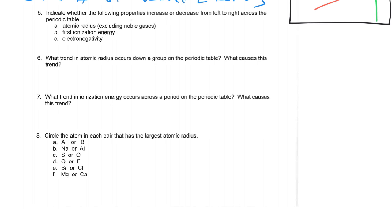And moving on. Let's just go all the way to number eight. Circle the atom in each pair that has the largest atomic radius. Again, we're just making comparisons, but I think it could be very helpful to have just a very rough sketch of a periodic table to make these comparisons. Aluminum and boron. So boron is right here. Aluminum is right below it.